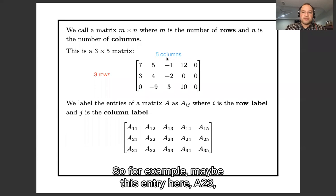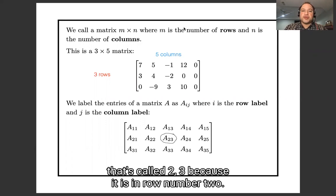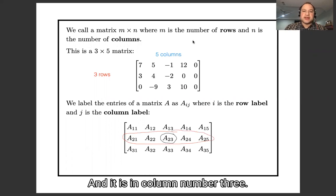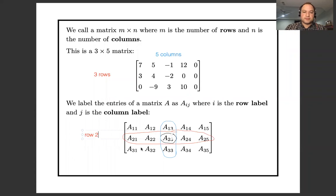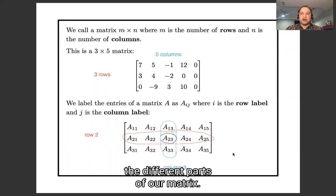And if we want to refer to an individual entry in this matrix, for example, maybe this entry here, A two three, that's called two three because it is in row number two and it is in column number three. Okay, so that's just how we refer to the different parts of our matrix.